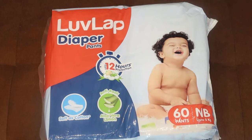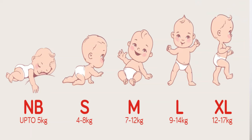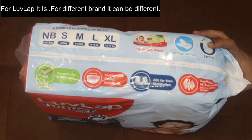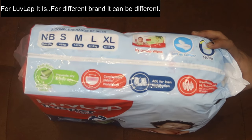The first criteria is the weight of the baby. When you look at any type of diaper, the weight range is also mentioned. As you can see, newborn is up to 5 kg, and small is up to 8 kg.